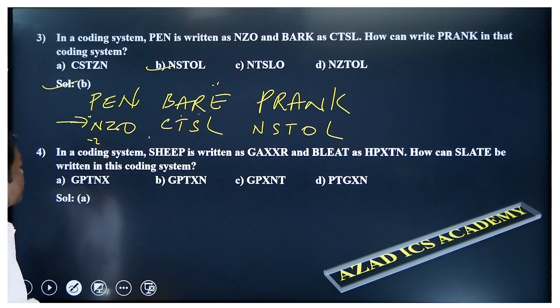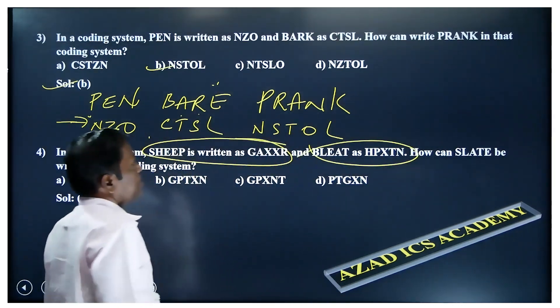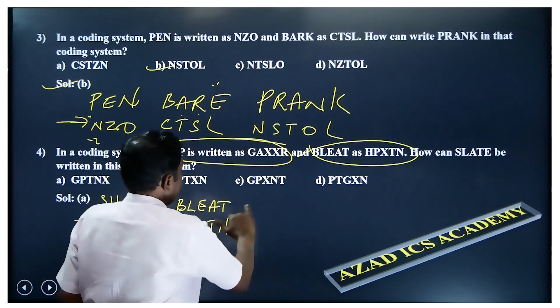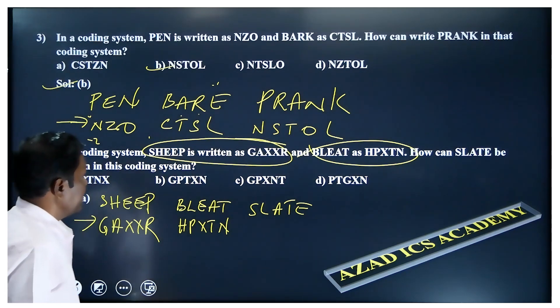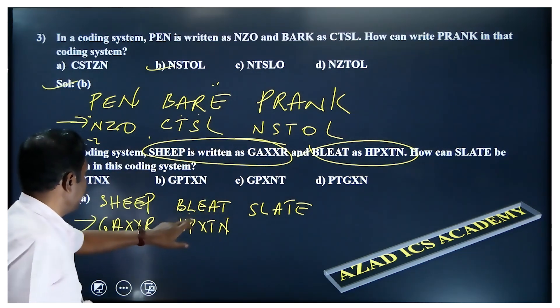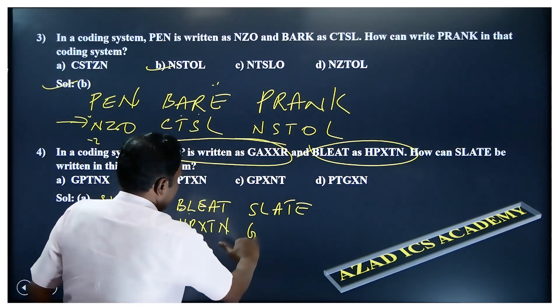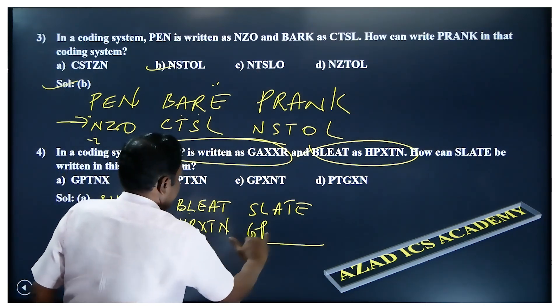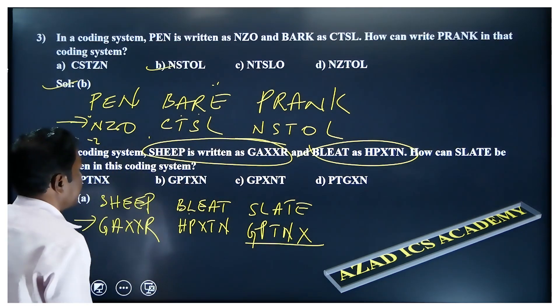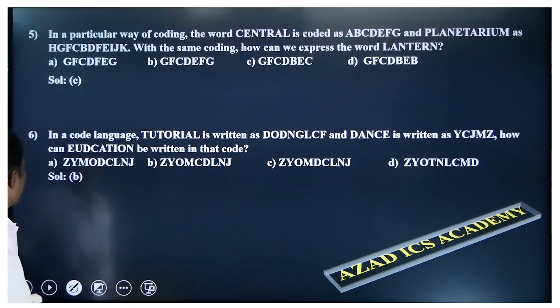So that is how it can be solved. Now, in the same way, SHEEP is written as, BEAD is written as N, how can SLATE be written in that code? H-P-X-D-N. Now you can see, S-L-A-T-E, five letters. Same letters in each word. S can be written as G. P-A-T-N-X. G-P-T-N-X, that's the option.